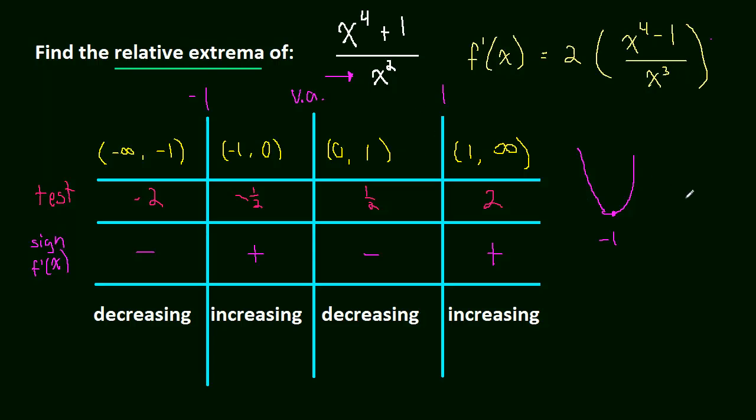Let's look at our other critical number. To the left of positive 1, the function's decreasing, and to the right, it's increasing. So 1 is also a minimum.